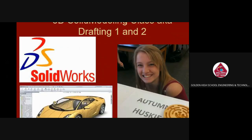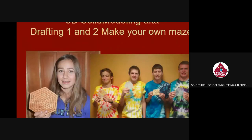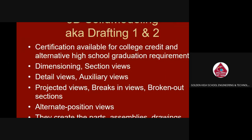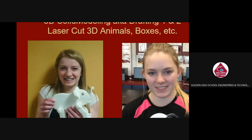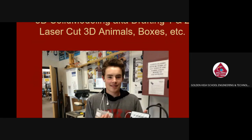Here are some examples of projects that have been done — the car and the maze. The BB maze is nice: you design it however you want and then we make it on one of the 3D modeling machines. You put in a BB and can twist it around to solve the maze. Here are more examples of mazes that students have made. We also do dimensioning, section views, detail views, auxiliary views, alternative position views, projected views, break-in views, and broken-out sections — creating parts, assemblies, drawing simulations, and take-home projects. A lot of students like to do the laser cutter, 3D printing, and the CNC mill.